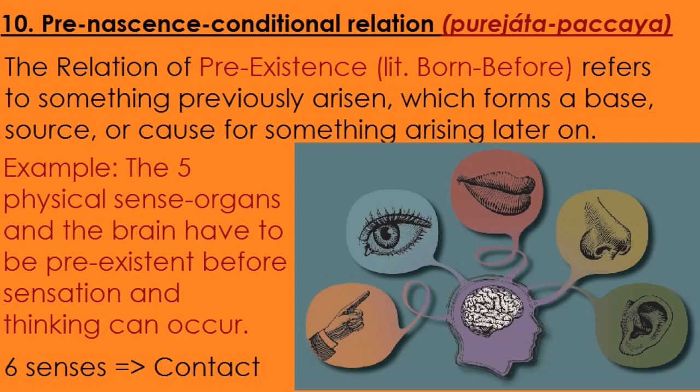Number ten is the pre-nascence condition — Purejata. The relation of pre-existence refers to something previously existing which forms a base, source, or cause for something arising later. The classic example is the five physical sense organs — the skin, eye, mouth, tongue, nose, and ear — which have to be present in order to make sense contact. They have to be pre-existent, pre-born, come into being before sensation and thinking can occur. The sense organs and brain must be there before sense contact, sensation, experience, and thinking can occur.